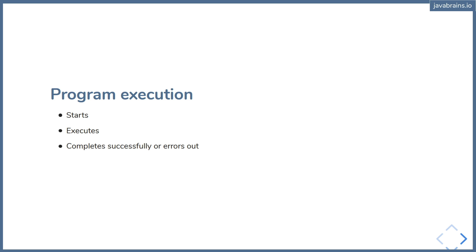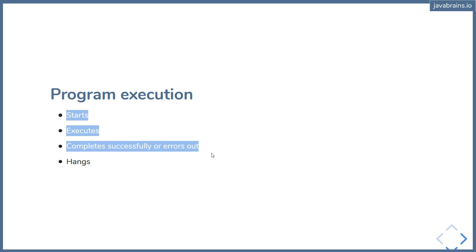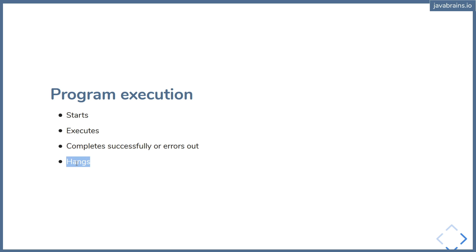But there is a fourth possibility, which is that it hangs. And this is what affects liveness. If the program is just doing those three things, it's said to be live or lively. But if it's hanging, then it's said to not have liveness.